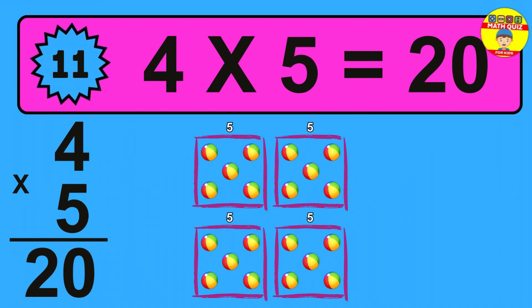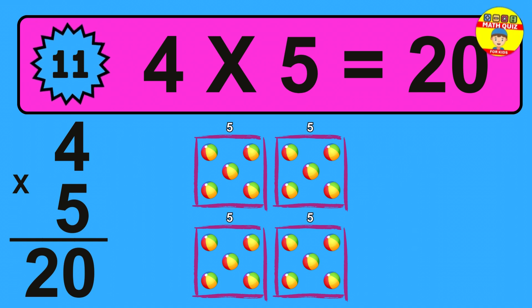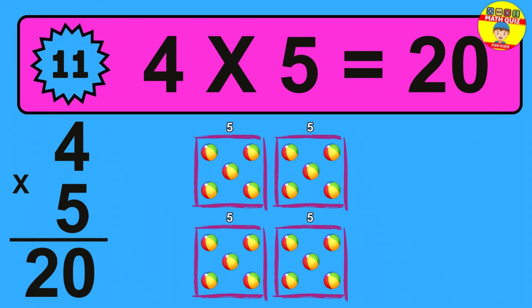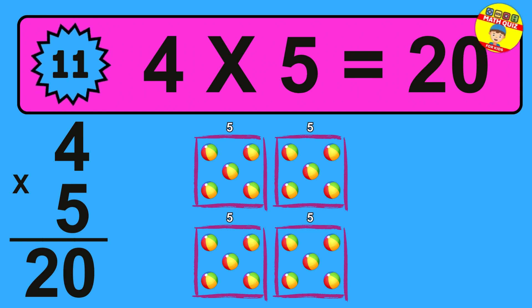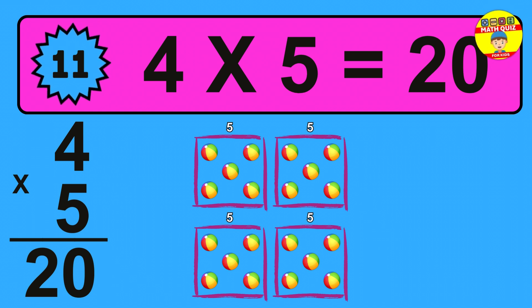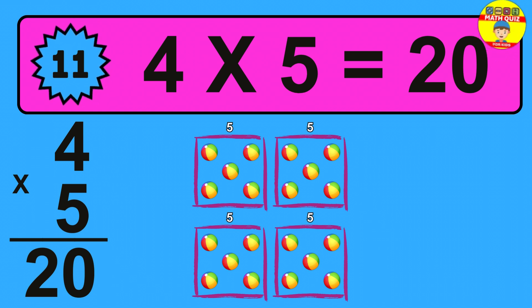Question 11: 4 times 5 equals what? To calculate, we have 4 groups with 5 balls each one. So how many balls do we have? 20 balls.